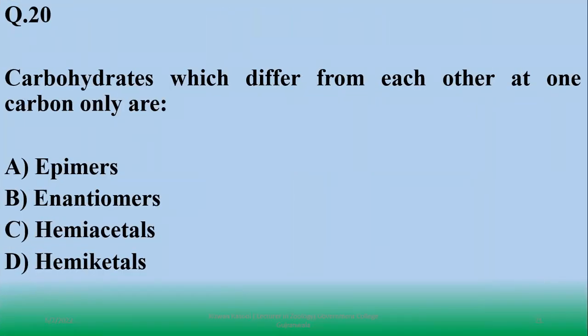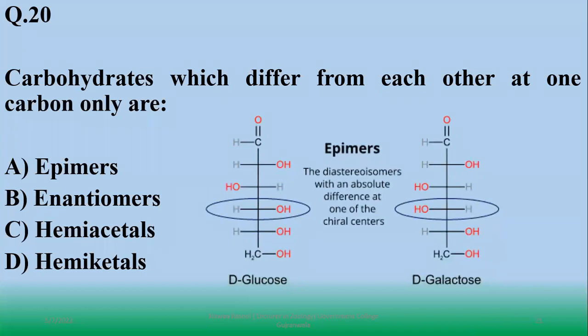Carbohydrates differ from each other at one carbon only - they are called epimers. These are stereoisomers with an absolute difference at one of the chiral carbons only. So right option is A.